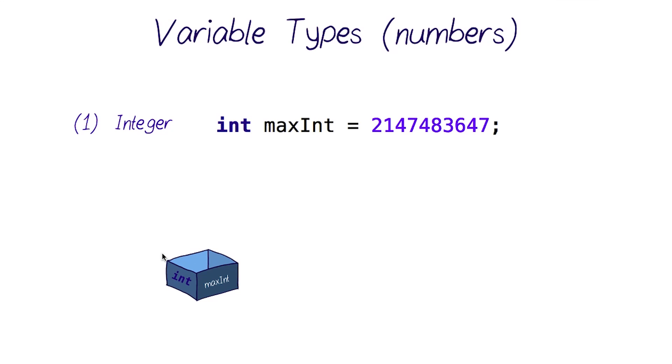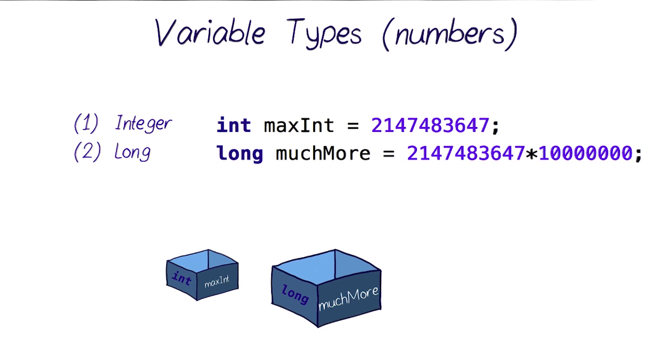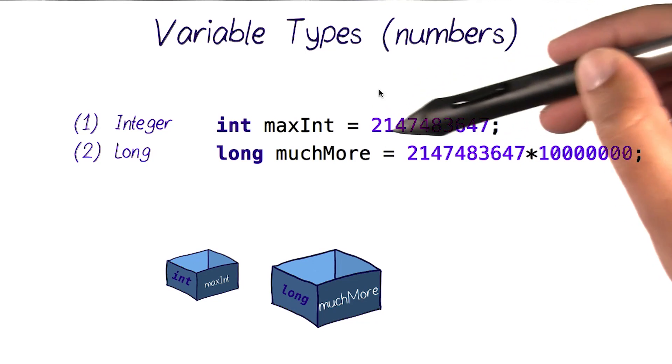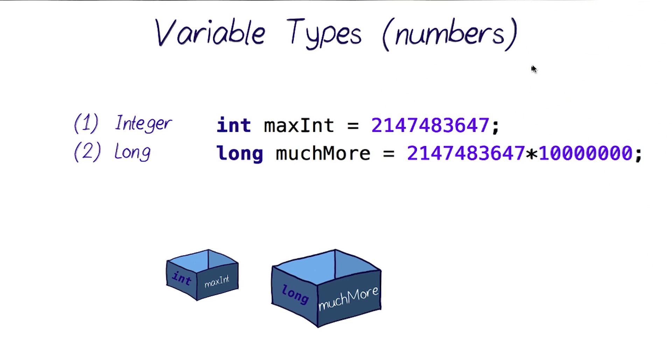This would work fine for most programs, but sometimes we need to keep track of much larger numbers. That's why Java offers this variable type called long. Long variables can store much larger numbers than an integer, but with the cost of making your program run slightly slower. So when writing a program, you should decide if the variable that you're going to use would ever need to have a value larger than this value here. If so, then use a long.